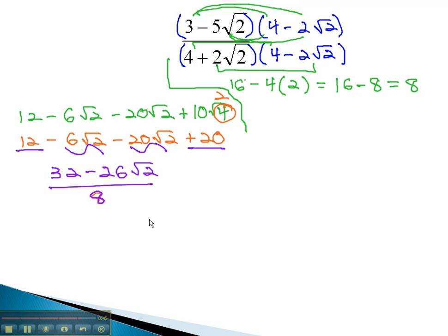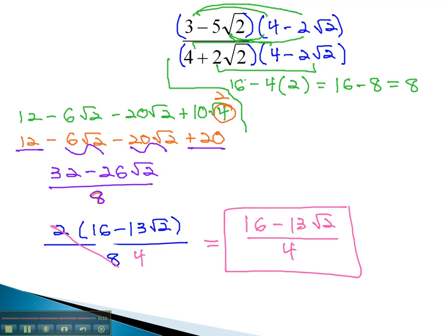Before we can reduce this fraction, though, we must first factor. The numerator has a factor of 2 in common, leaving behind (16-13√2)/8. Now we can divide out the common factor of 2, and we're left with (16-13√2)/4 for our final solution.